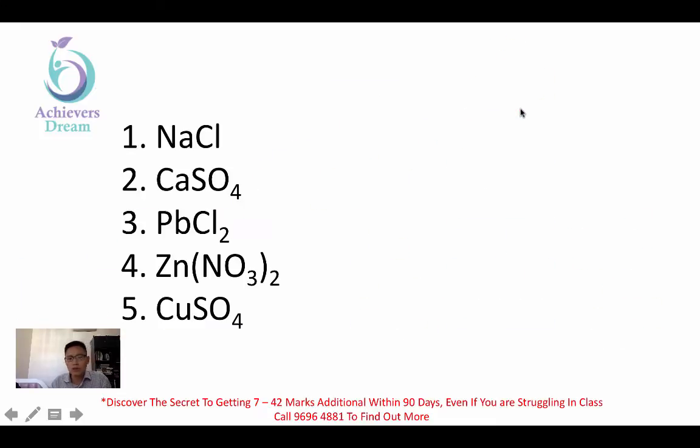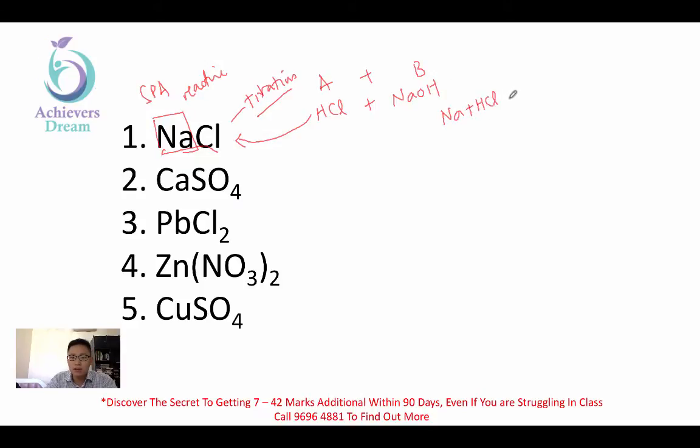So from here, you see that it is NaCl. Where you see things like sodium, you see SPA salts or reactive metals. Straight away think of titration. So when you think of titration, what are the two reagents you are going to use? Use acid plus base. So what acid will give you chloride? So it's hydrochloric acid plus NaOH. This is how you prepare method number one. Can you use Na plus HCl? You cannot do that because it's too explosive.